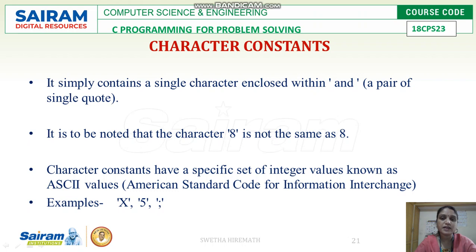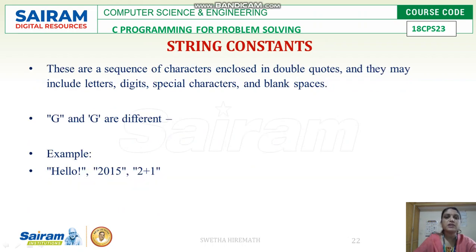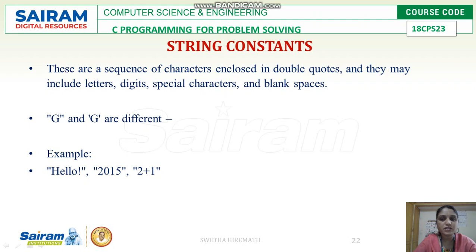ASCII stands for American Standard Code for Information Interchange. String constants are sequences of characters — more than one character — enclosed within double quotes. Examples include "hello", "2015", "2+1". If everything is enclosed within double quotes, it is called a string constant.